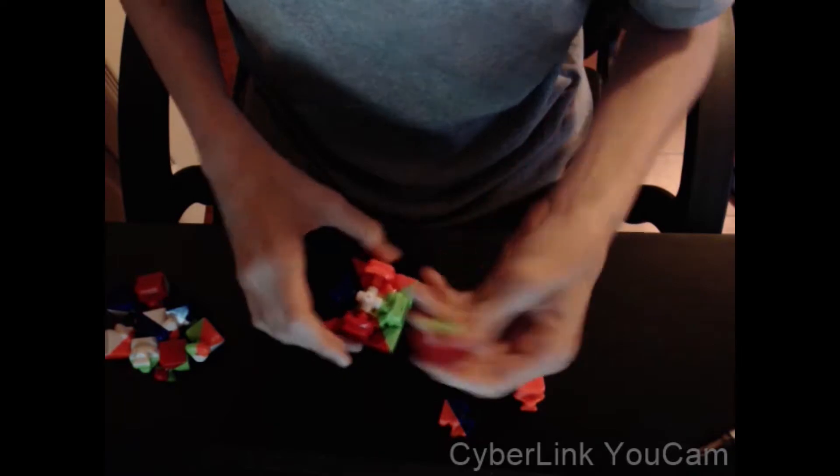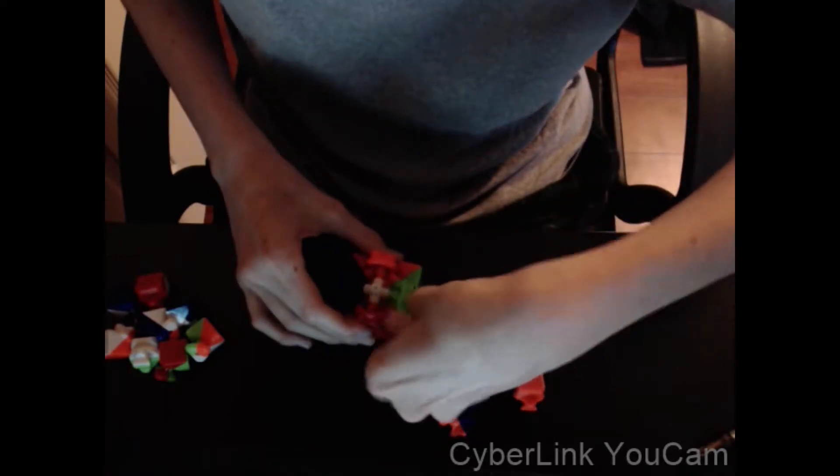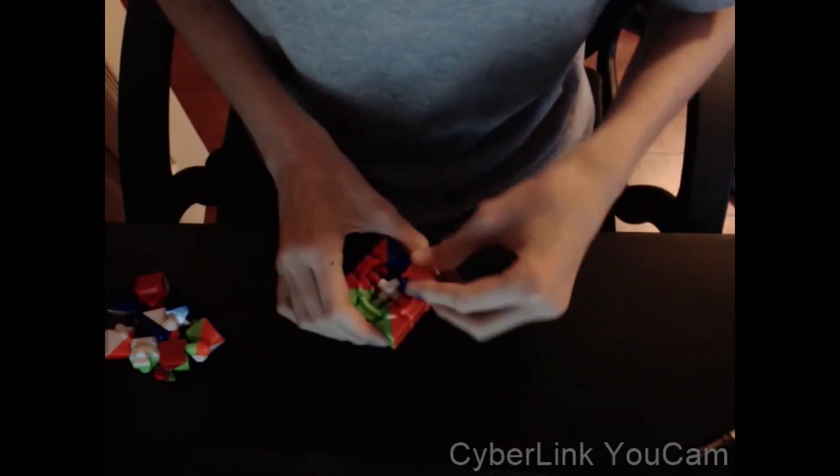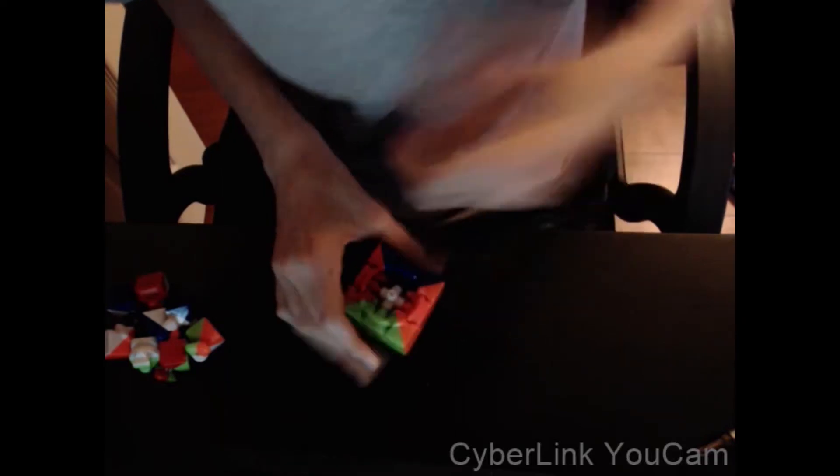Now, we're going to take the four other pieces that we set over here and put those in according to where they go. This is green and red, so we're just going to slide the green and red in there. This is green and orange. Blue and red, and blue and orange. Slips in right there.